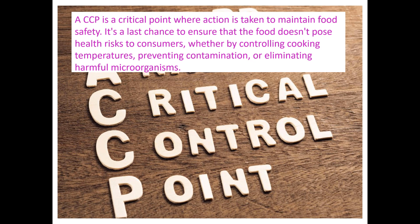So to conclude, the CCP — the critical control point — is a very important step in a food process from a food safety point of view. It's so important to have control around that step in your food process flow. Think of it as the final check, the last time that you can ensure that a particular hazard is not in your product, be it a biological, physical, or chemical hazard. A CCP is a critical point where action is taken to maintain food safety, and it's the last chance to ensure that the food doesn't pose a health risk to consumers. It can be controlling cooking temperatures, preventing contamination, or eliminating microorganisms — it all depends on what type of food you're dealing with. I hope you found this video useful. If you did, give us a like and please feel free to subscribe to our channel for similar content.